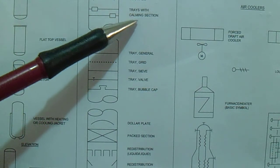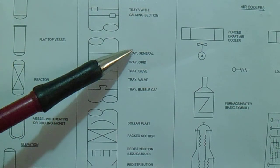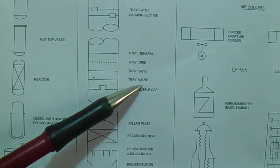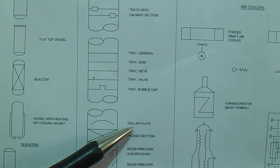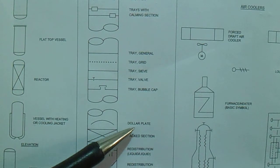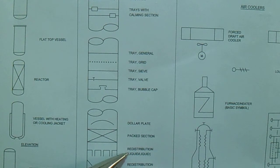Continuing with internals, we have tray with downcomer, tray with calming section, general tray, grid tray, sieve tray, valve tray, bubble cap tray, dollar plate, and a packed section with liquid redistribution.